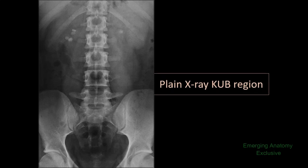This X-ray is taken on AP view — anterior-posterior view. Before going to find out the positions of the kidney, ureter, and urinary bladder, we will go for some identifications. Already you have known that these are the shadows of ribs, and I think you are also familiar with these structures. These are the bodies of the vertebrae.